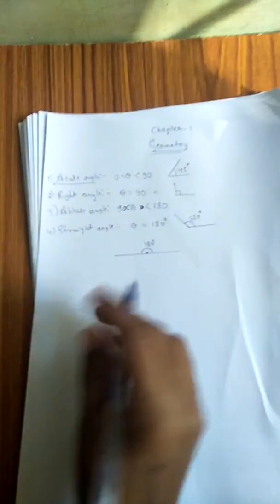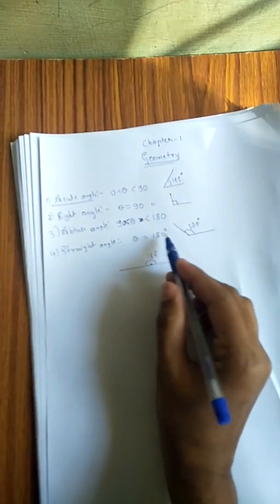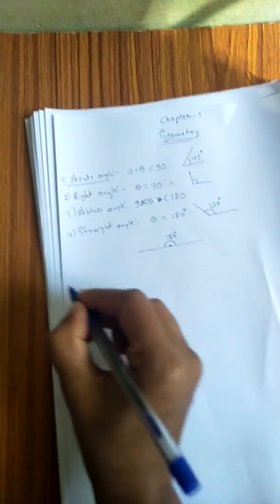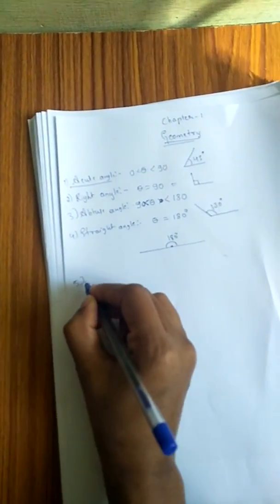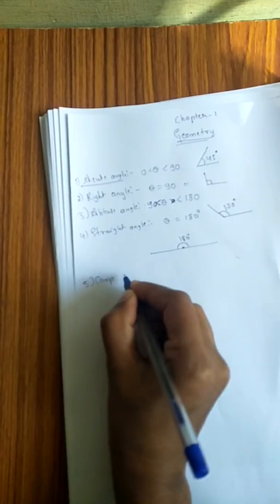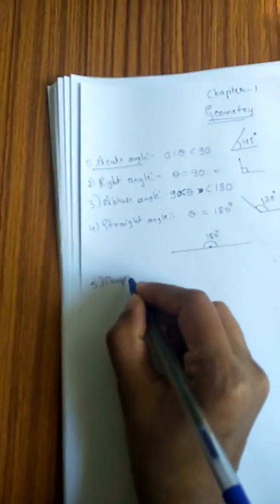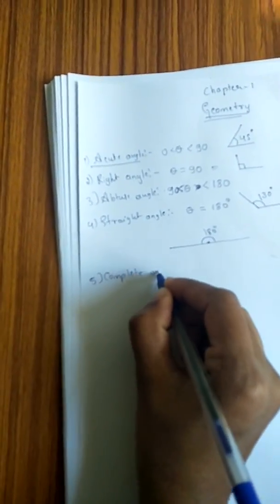Okay, in the case of straight angle, theta equals 180. Fifth one, complete angle.